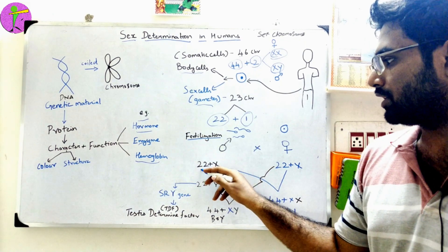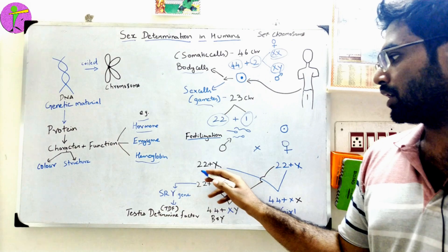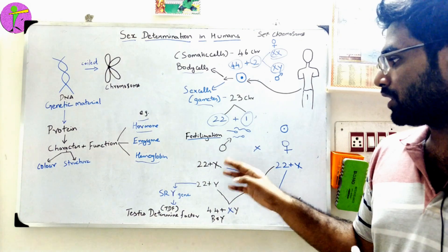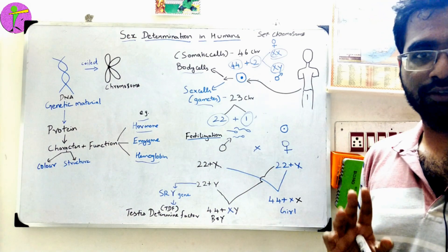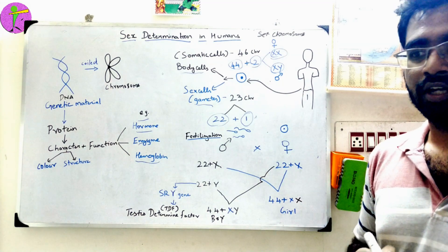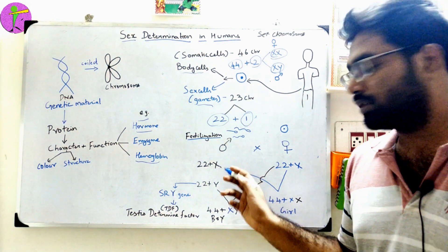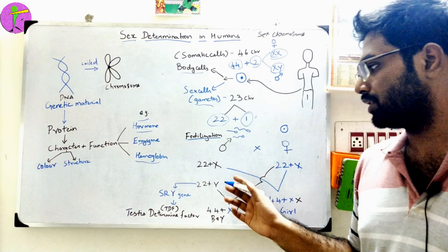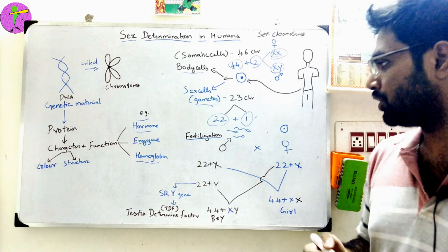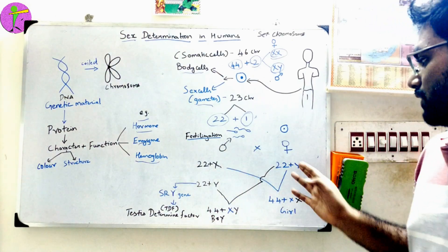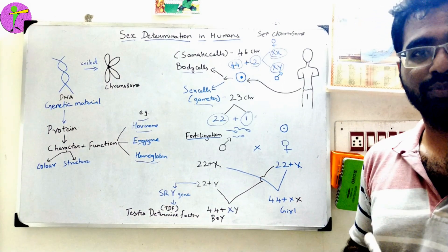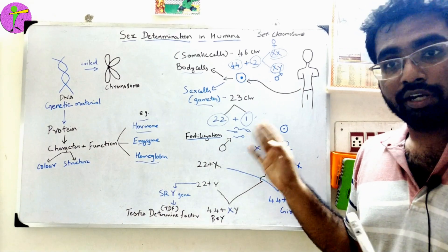If you look at the male, his gametes are 22 autosomes plus X or Y. There are two equal proportions of sperm — those carrying X and those carrying Y. So male sperm can be 22 plus X or 22 plus Y. The female egg is always 22 plus X.